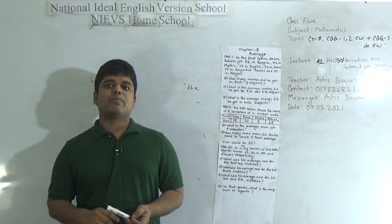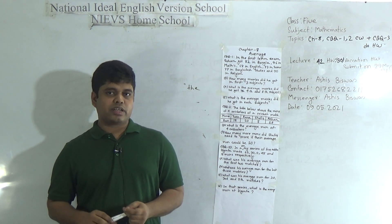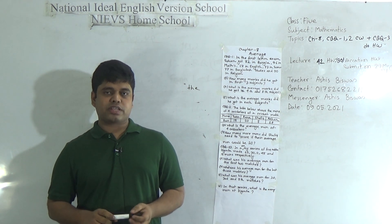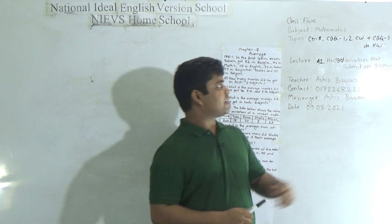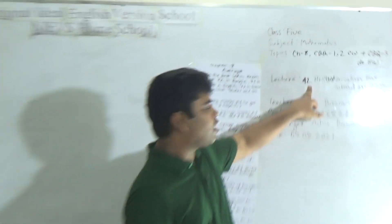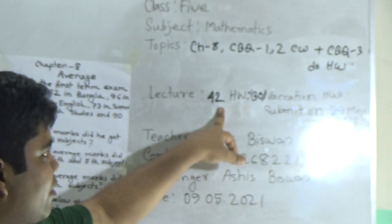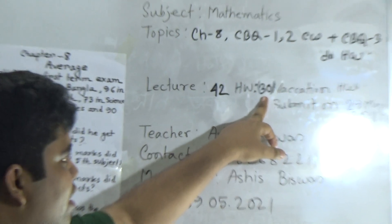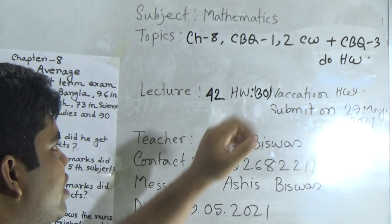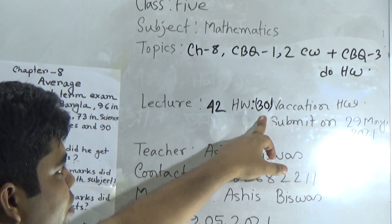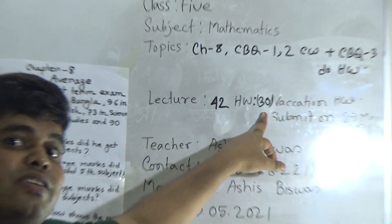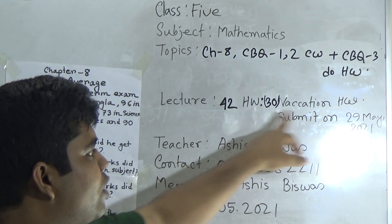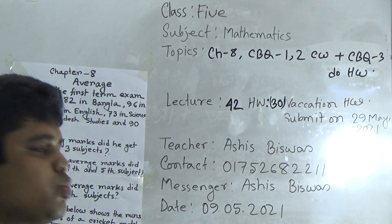Today I am going to take a math class for the students of class 5. Today is our lecture number 42 of half yearly and today's SW number will be 30. Dear student, today's SW will be your vacation SW and you must submit it on 29 May 2021.